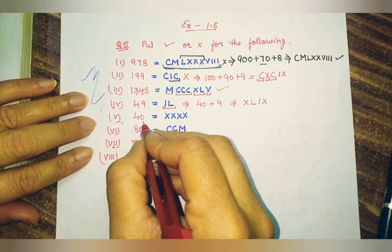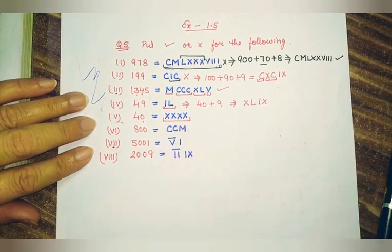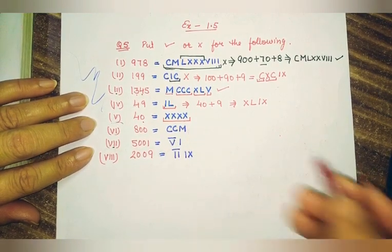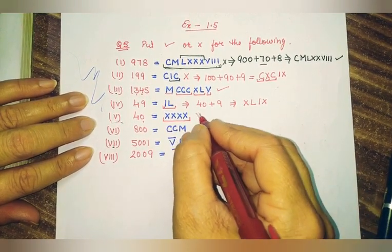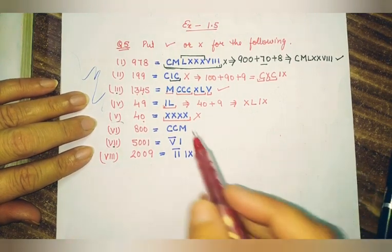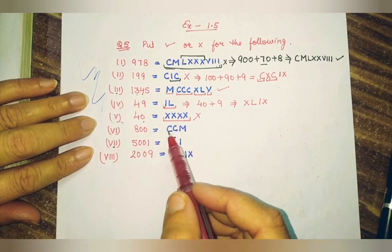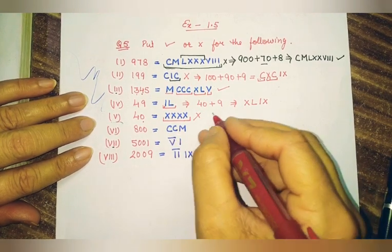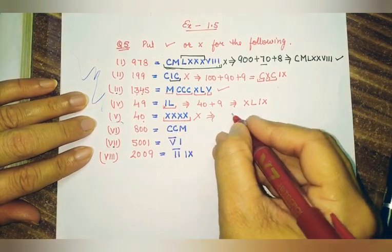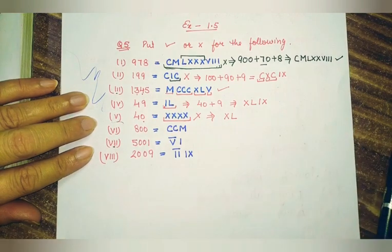Next, the number 40 is given. Here they have repeated a symbol 4 times, which is wrong — we cannot repeat a symbol more than 3 times. So that is wrong. The correct way to write 40 is 50 minus 10, which gives XL.